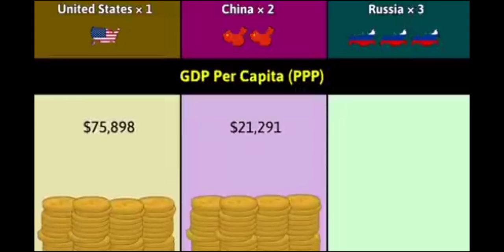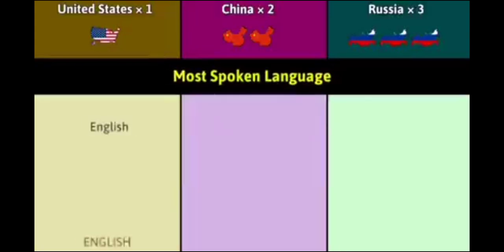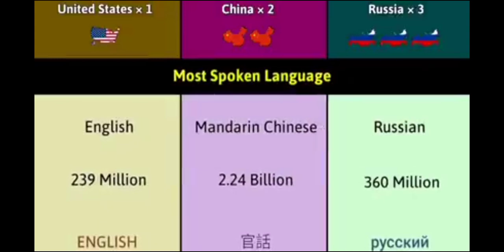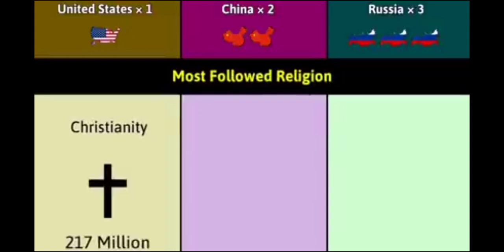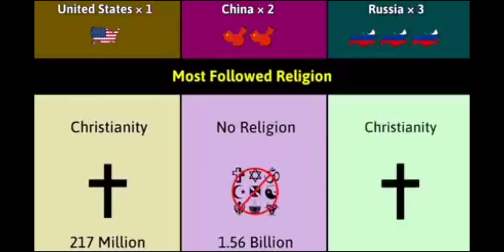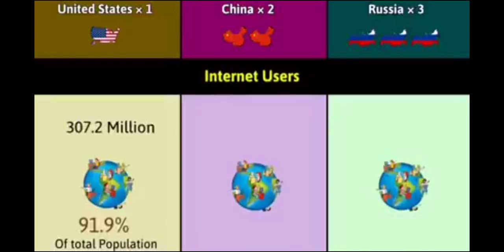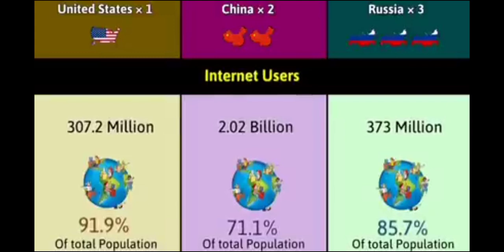Most spoken language: English 239 million, Mandarin Chinese 2.24 billion, Russian 360 million. Most followed religion: Christianity 217 million, No religion 1.56 billion, Christianity 210 million. Internet users: 307.2 million, 2.02 billion, 373 million.